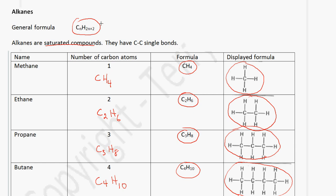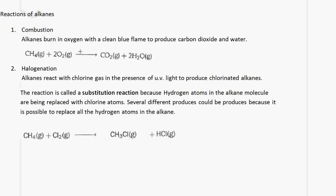So what you need to know is the general formula CnH2n+2. You need to know that alkanes are saturated compounds, and you need to be able to draw the displayed formula of the members of this homologous series. We also need to know the reactions of alkanes. The first reaction is combustion — alkanes burn in oxygen with a clean blue flame to produce carbon dioxide and water. For example, methane plus oxygen gives us carbon dioxide and water.